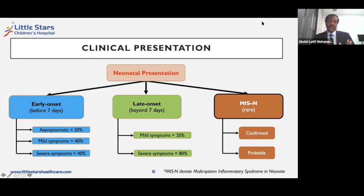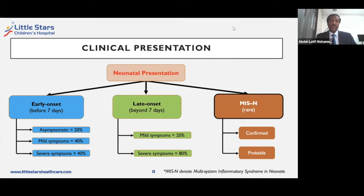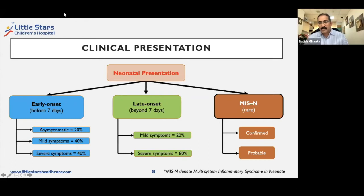Among the early onset neonatal COVID, the incidence numbers differ by region and by the case series you look at. But generally speaking, around 40% will have very severe symptoms, and that can reach up to requiring ventilation. In terms of late onset, it is even more severe — maybe up to 80% will develop some severe symptoms. Satish is going to talk about his experience with neonatal MIS-N and show us some cases and how they presented and were managed.